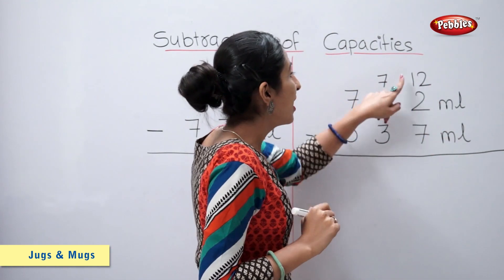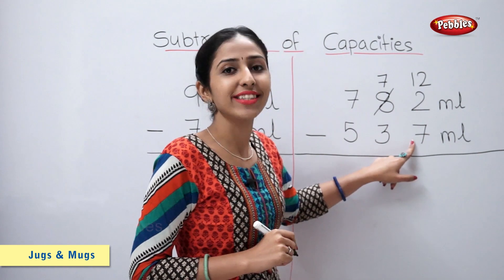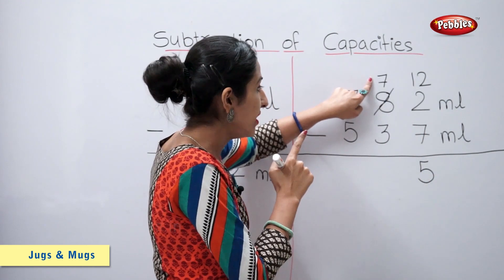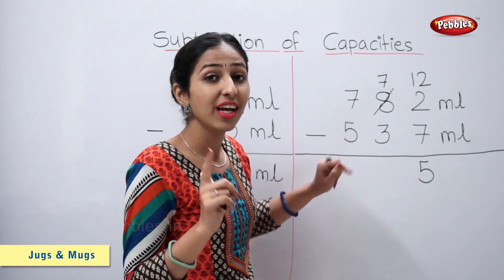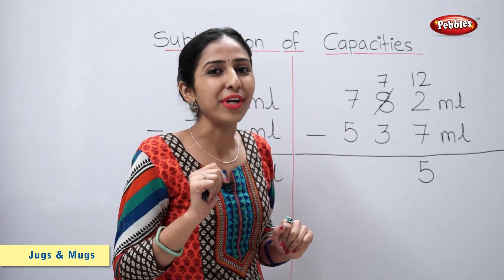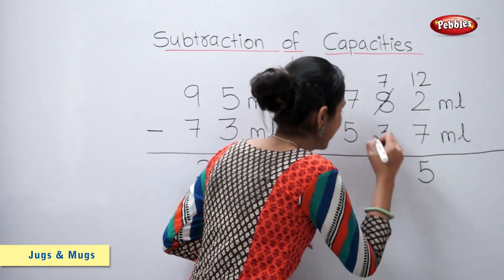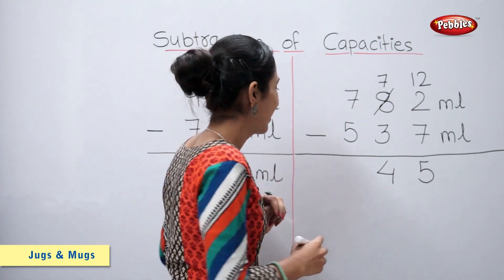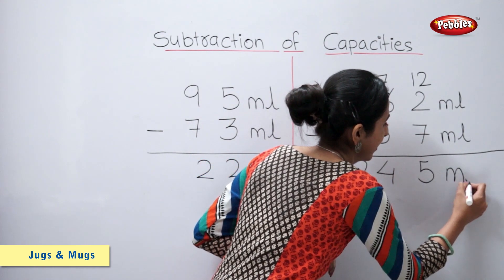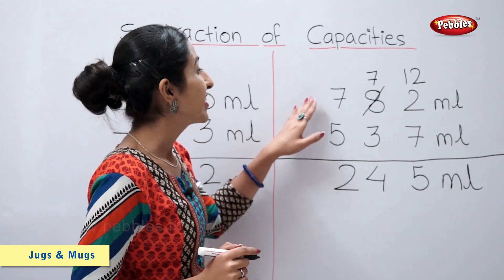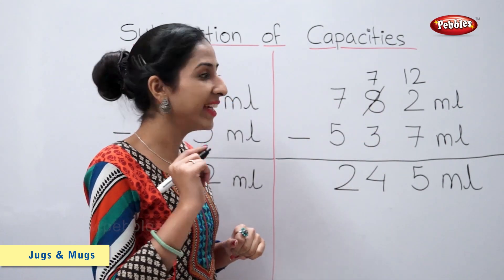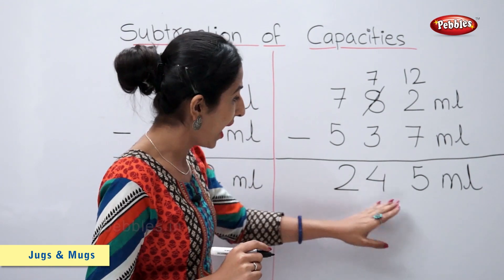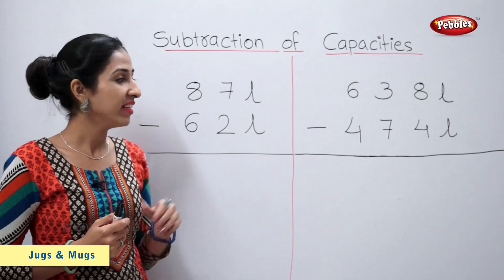Now, 12 minus 7 is equal to 5. 7 minus 3 is equal to how much? Count and tell me — 4. 7 minus 5 is equal to 2. So, 782 ml minus 537 ml is equal to 245 ml. Let's solve these examples.